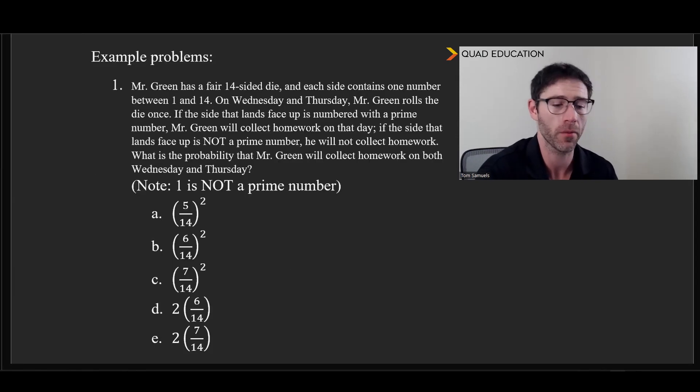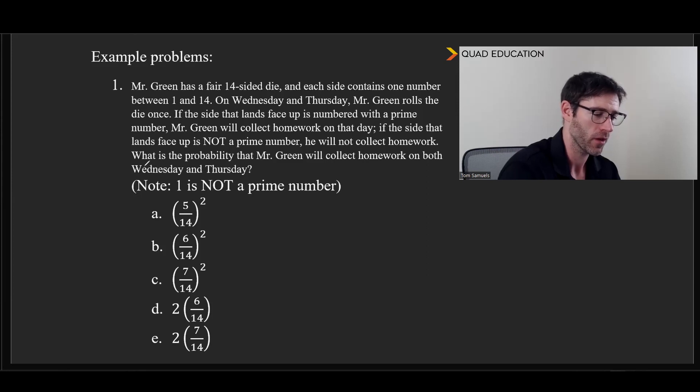Moving on here, we have our practice problems. Two as usual, but we'll do one at a time. Go ahead and try this first one and see how you do. All right, let's take a look. So pretty long problem here. Let's look to the end first, as is practice. What is the probability that Mr. Green will collect homework on both Wednesday and Thursday? So we have 'and' and 'both'. We know we're multiplying something by something else.